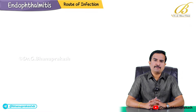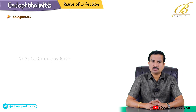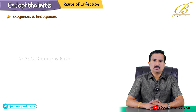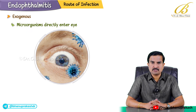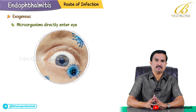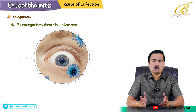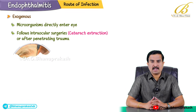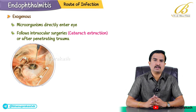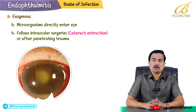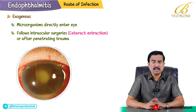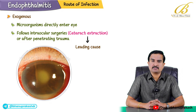The route of infection can be of two types: exogenous and endogenous. The exogenous route occurs when microorganisms directly enter the eye, commonly following intraocular surgery such as cataract extraction or after penetrating trauma. Post-operative infections remain a leading cause of exogenous endophthalmitis.